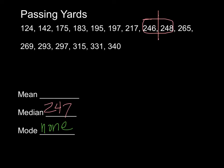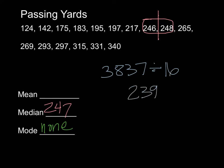Now it's time to find our mean. We're going to add up all of our numbers. I've taken the liberty of calculating this ahead of time — we have 3,837 total yards for Cam this year across 16 games. So we divide that by 16 and we get 239.8 yards per game. So our mean for this set of data is 239.8. That is your quick review of what mean, median, and mode are.